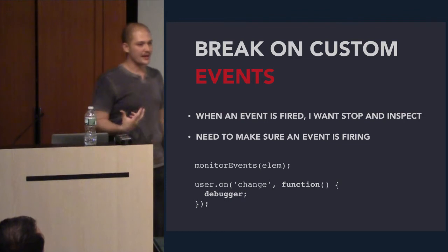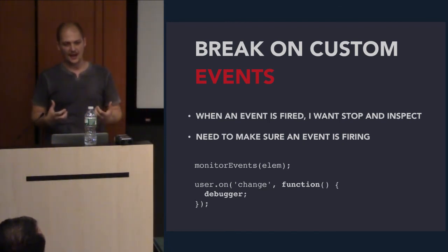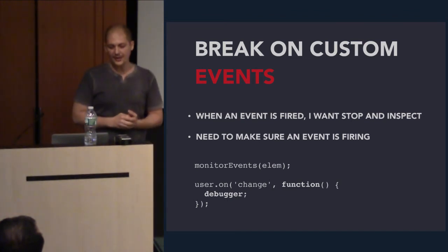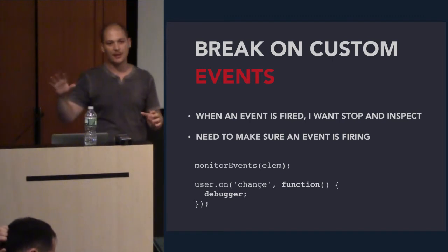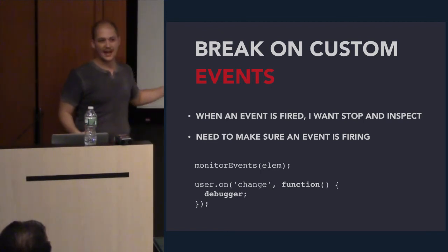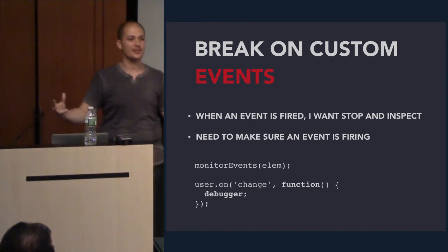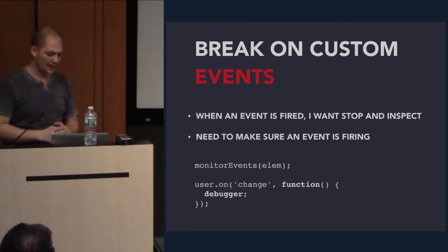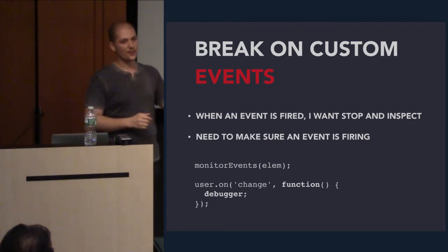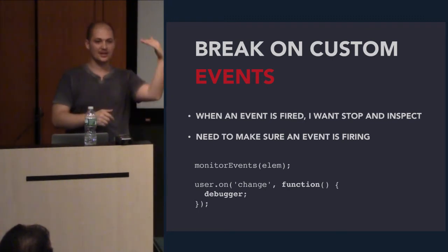Another trap you can set is breaking on custom events. Something really annoying about JavaScript development is events — callbacks, asynchronous stuff — it can be fun but it's also annoying to debug. One thing I found really valuable is when I want to make sure an event is properly being emitted: listen to that event with a function that simply has a debugger statement. Next time that event is triggered, the debugger will break and I can make sure all the parameters I want are being passed. I also think you'd enjoy the command line API called monitorEvents — when you call it on a DOM element, every time an event is triggered on that element, it will show it in the console.